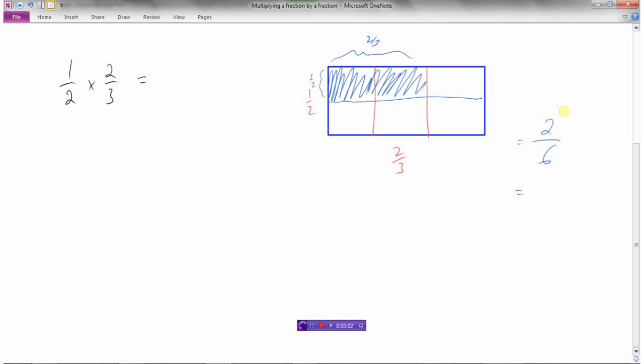But we always want to reduce our fractions. So two and six are both even numbers. I can divide them both by two. Two divided by two is one, and six divided by two is three. So one-half times two-thirds from our little diagram here would equal one-third. I've shaded one-third of this entire rectangle.